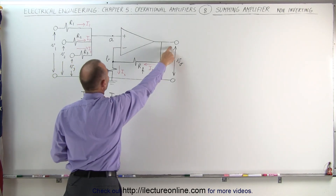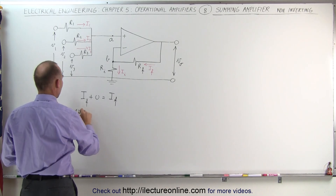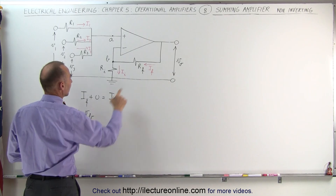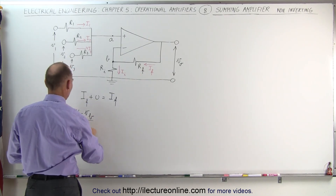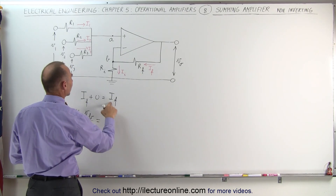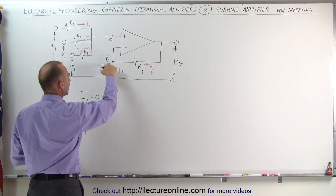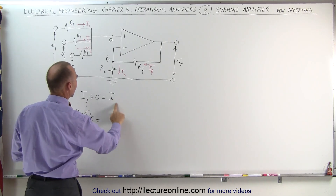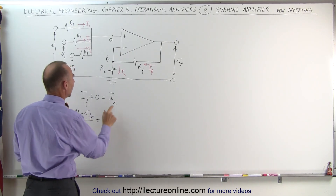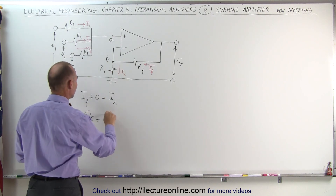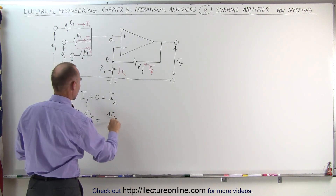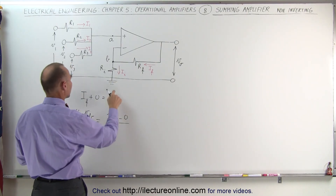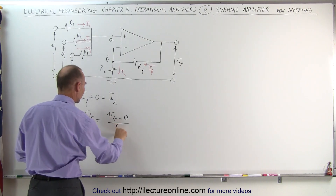Assuming that the potential here is higher than it is here, we can say that V at O minus V at B, divided by the resistance R sub F, gives current I sub F. That equals I sub I — sorry about that correction — and I sub I would be equal to the voltage difference, which is V sub B minus zero, because that would be ground, divided by the resistance R sub I.